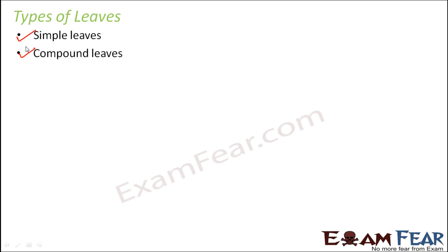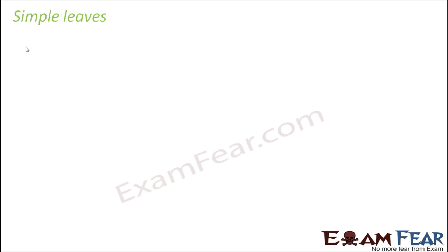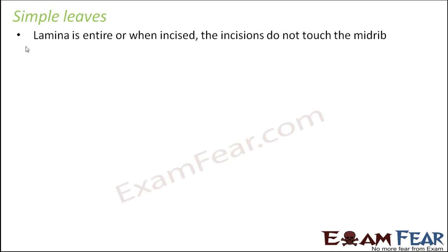Let us start our discussion with simple leaves. Lamina is entire, or when incised, the incisions do not touch the midrib. You have a new term here: incised. Incised means something which is deeply cut or engraved. In the case of simple leaves, there are two options: either the lamina of the leaf will be entire — meaning a plain, uncut lamina — or if it is incised, the incisions do not touch the midrib.